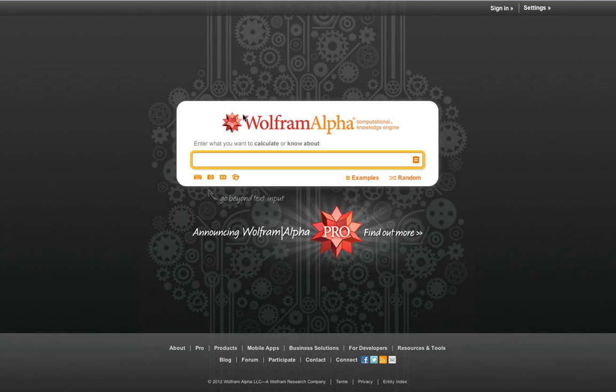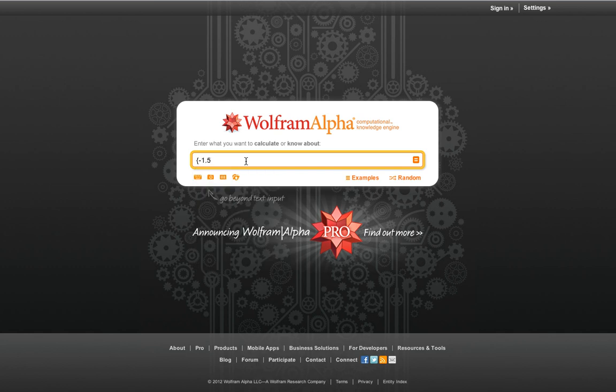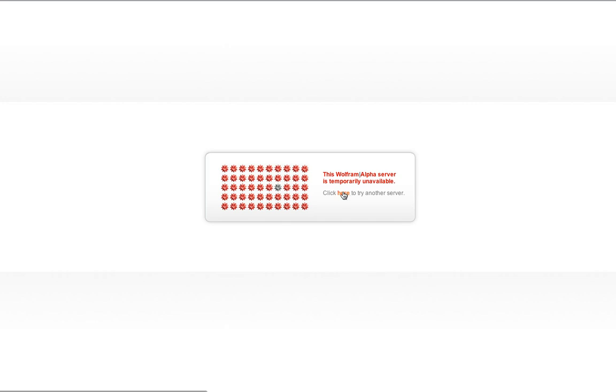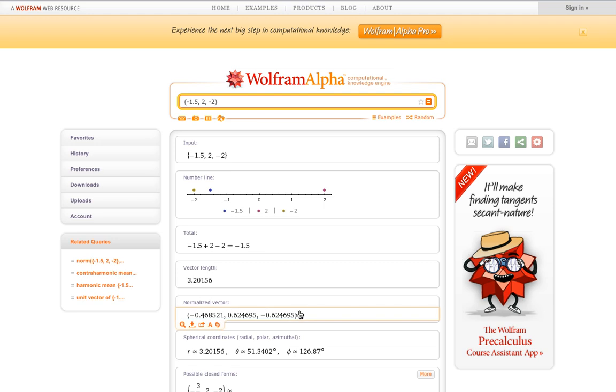Or you can just go straight to Wolfram Alpha. We go to Wolfram Alpha, type in a vector of minus 1.5, 2, and minus 2. Oh dear, Wolfram Alpha is temporarily unavailable. Oh, that was close. That's a disadvantage of going to Wolfram Alpha for all of your computing needs, is it may not be there. So then we find that the normalized vector, the unit vector, is -0.469 i-hat +0.625 j-hat minus 0.625 k-hat.